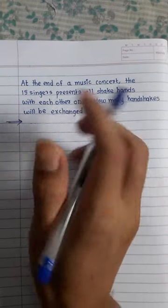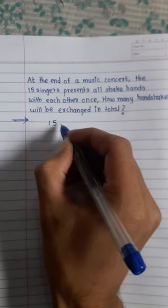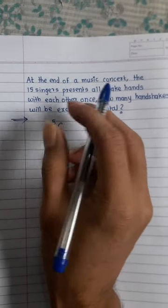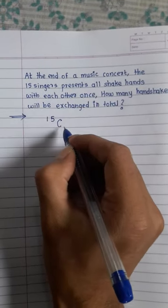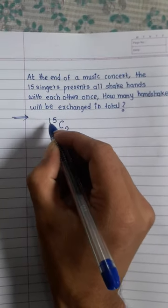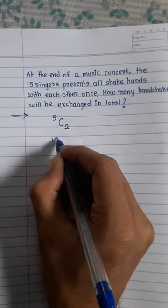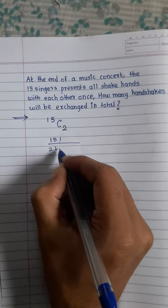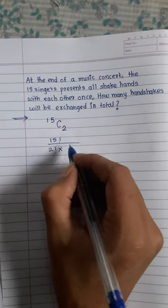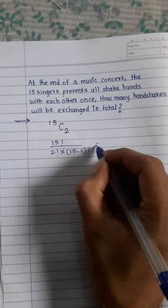Here there are 15 singers. This is a combination, and the handshakes are between two people. Therefore, this is 15C2. This is 15 factorial divided by 2 factorial into (15 minus 2) factorial.